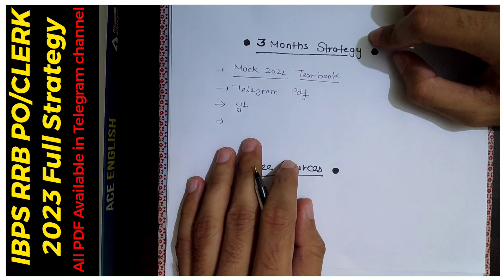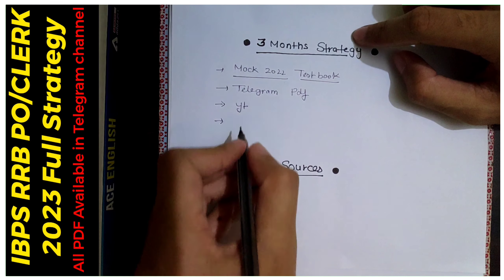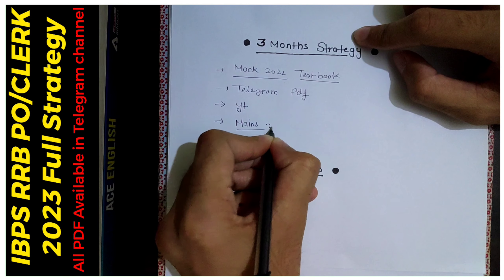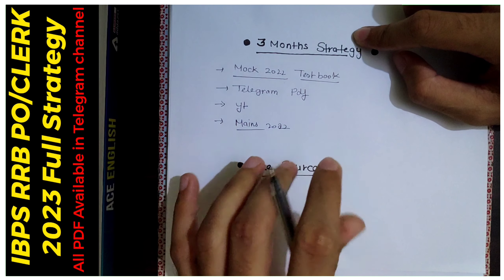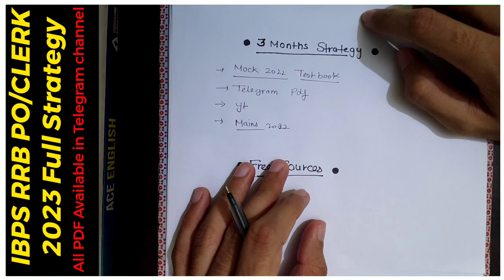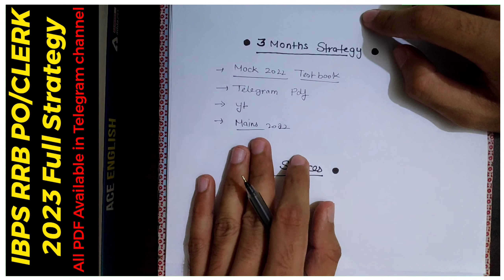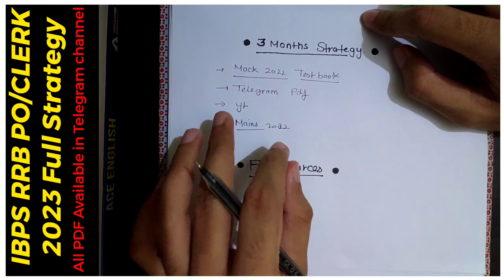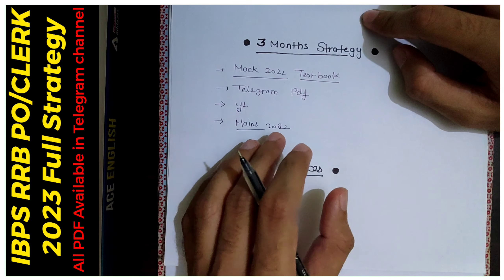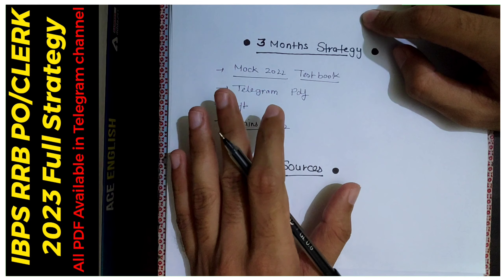There is enough time to attempt mocks. Try to do mains mock tests on alternate days. You can also use the 2022 mains test papers for practice. This is our overall strategy. Practice daily — focus on speed, DI (Data Interpretation), and puzzles, solving 5 to 10 of them each day.